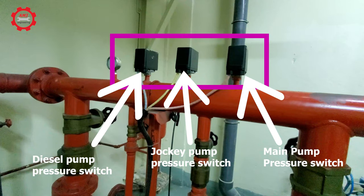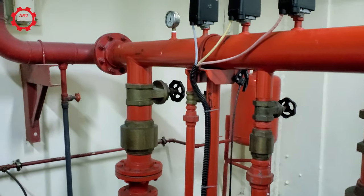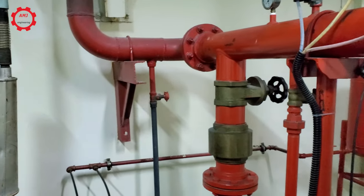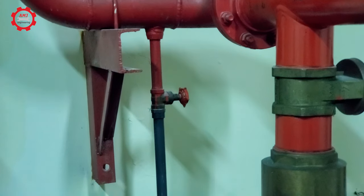These settings are provided here, so the jockey pump will start and stop automatically based on the system pressure. Let's do the experiment here. I'll open the drain test valve on the discharge line to reduce the system pressure.